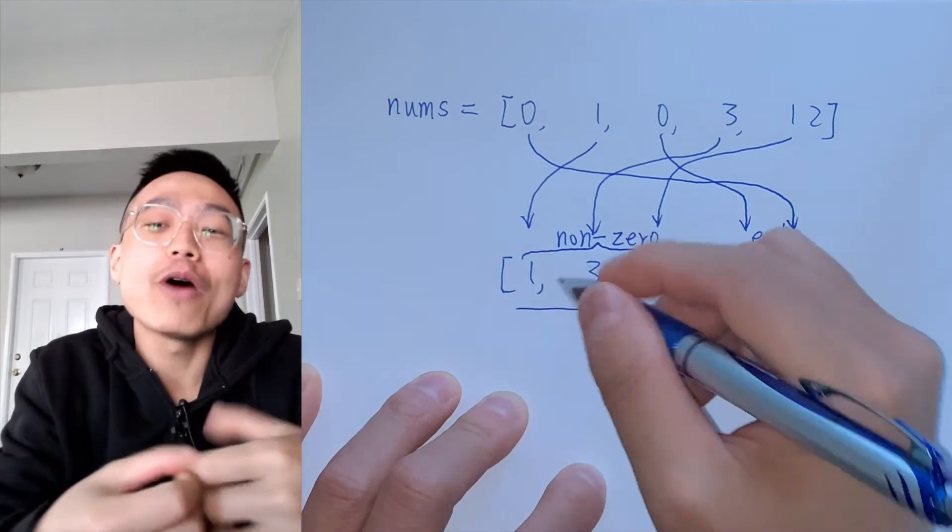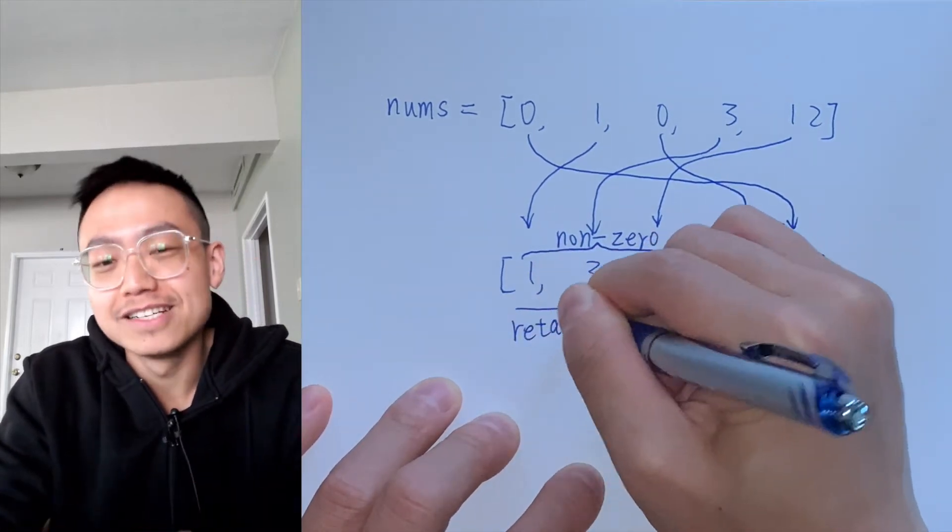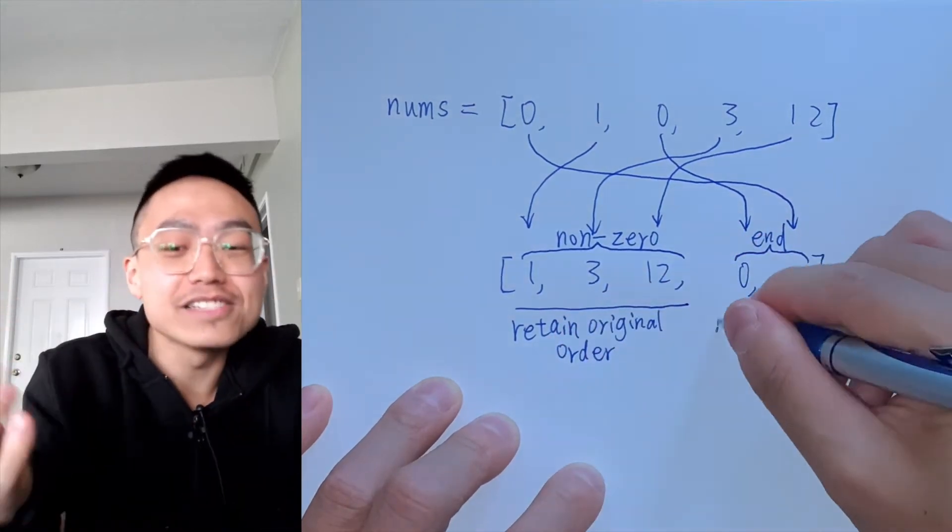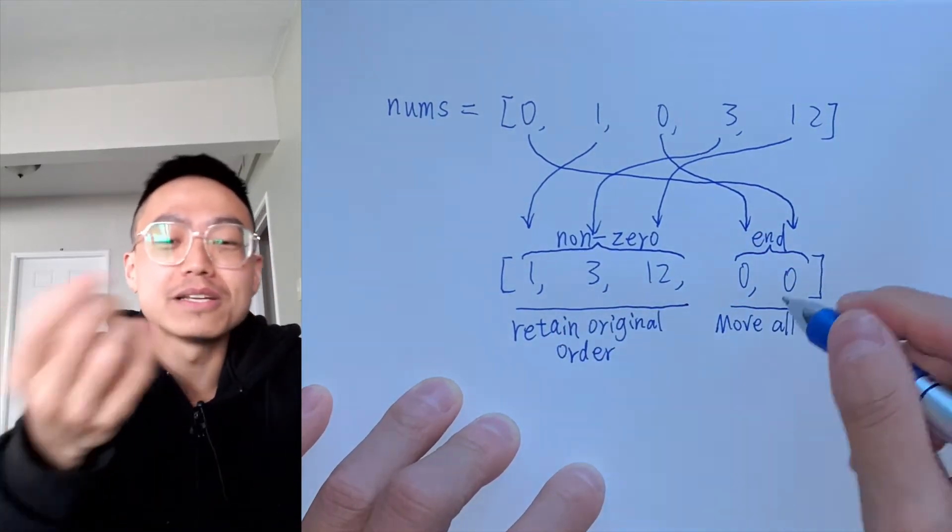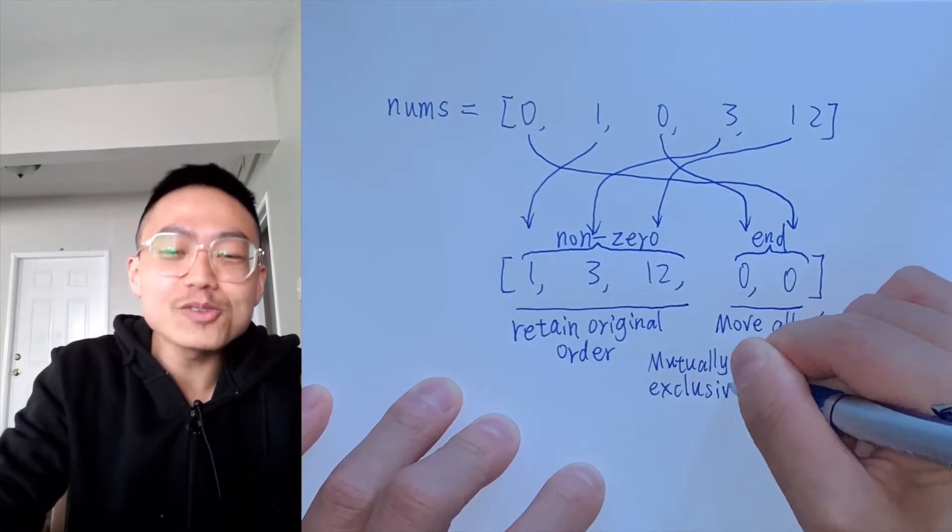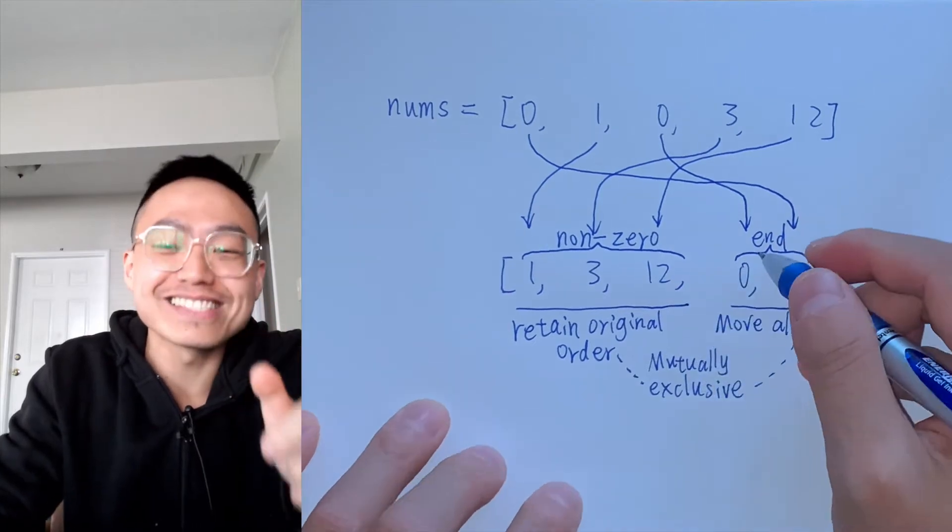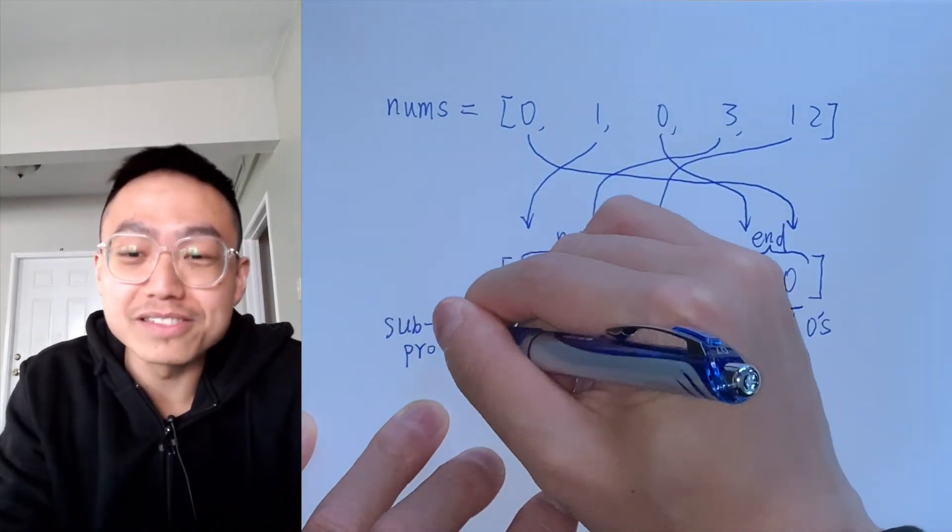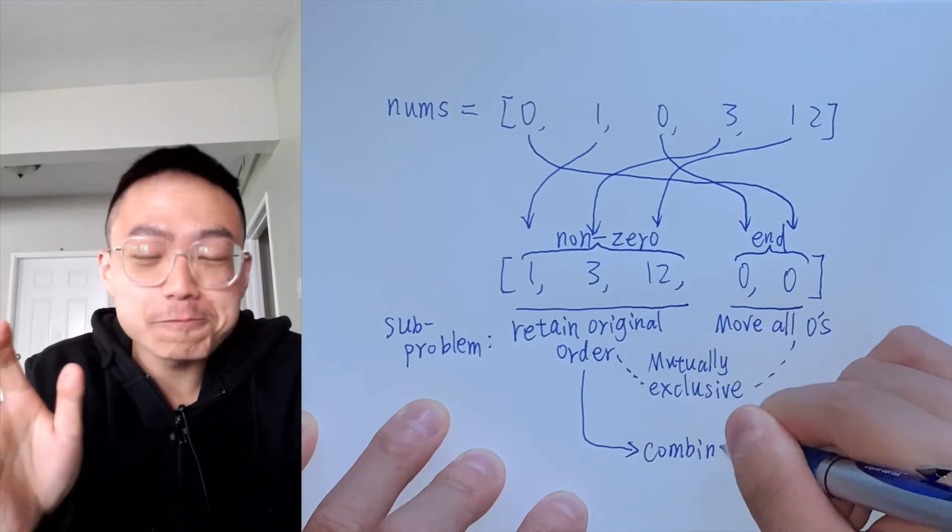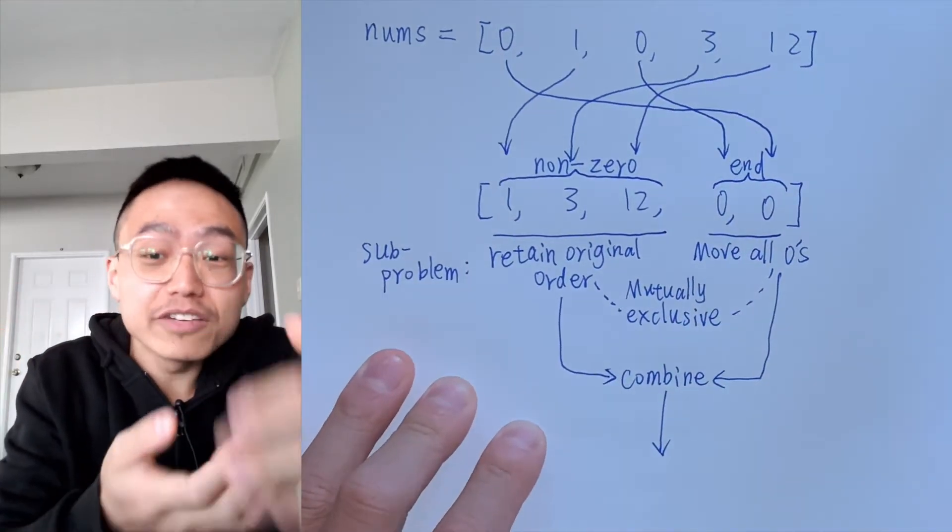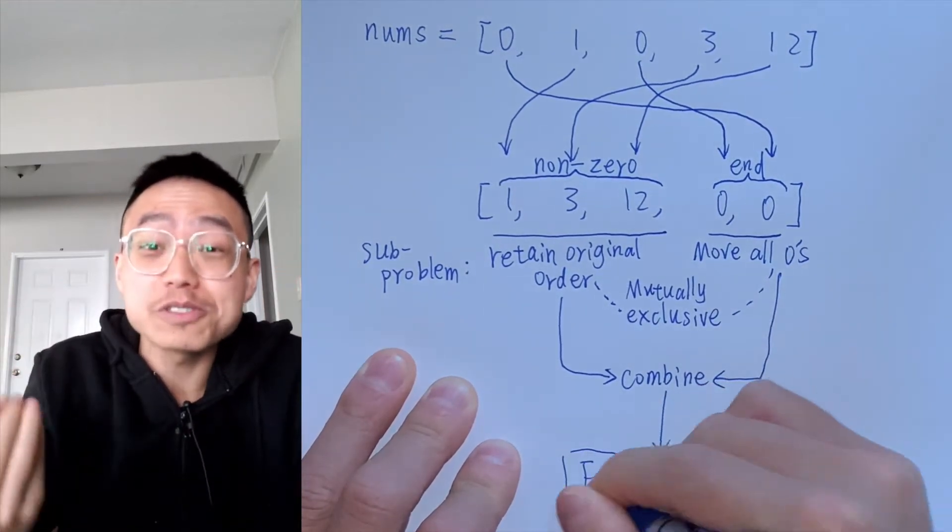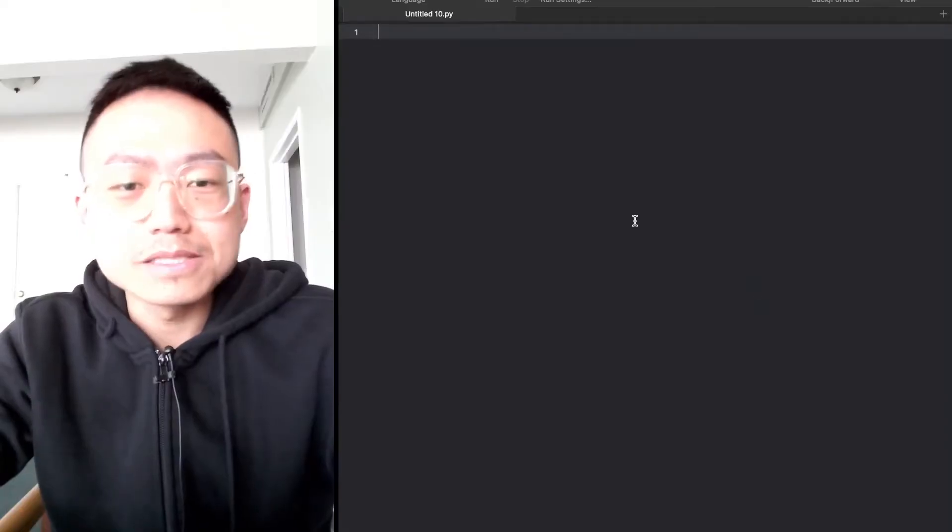The two requirements of the question are: first, move all the zeros to the end of the array, and second, all the non-zero elements must retain their original order. It is good to realize here that both requirements are mutually exclusive. You can solve the individual subproblems and then combine them for your final solution.